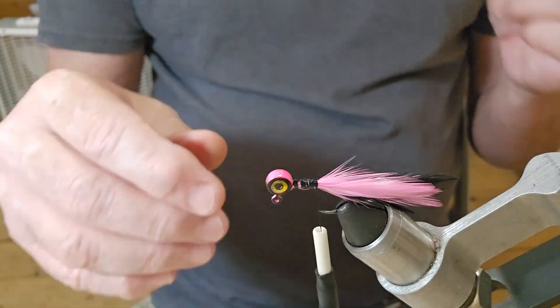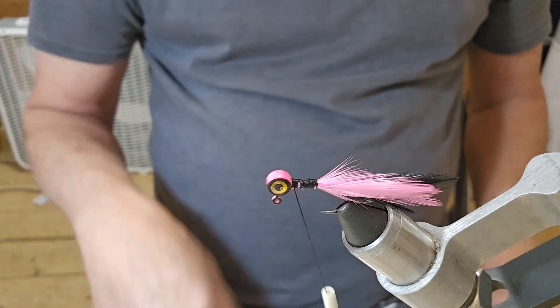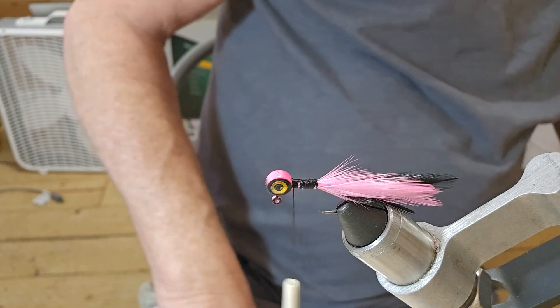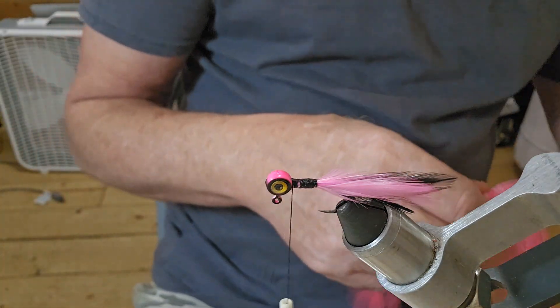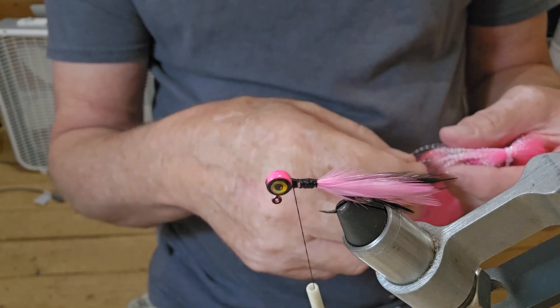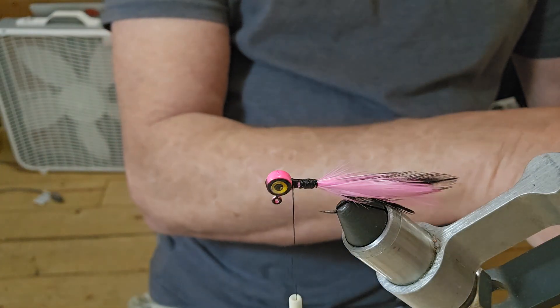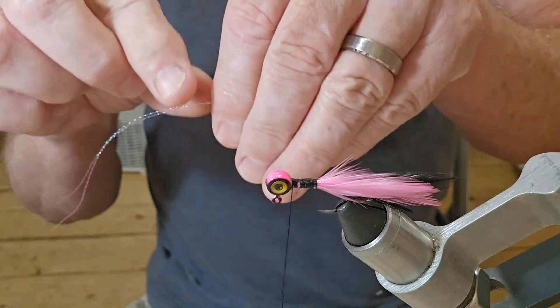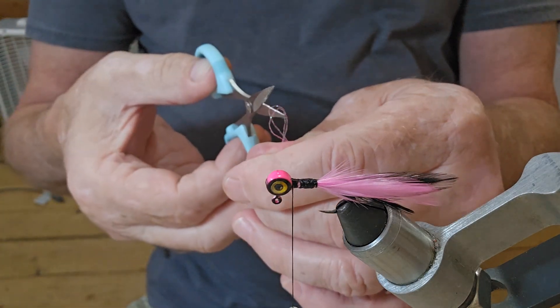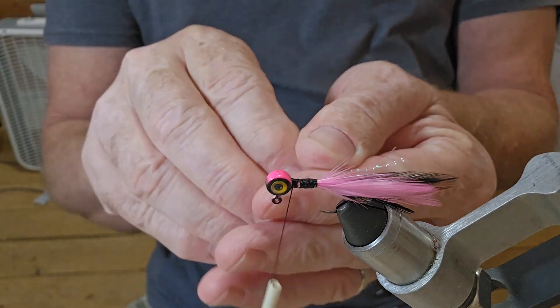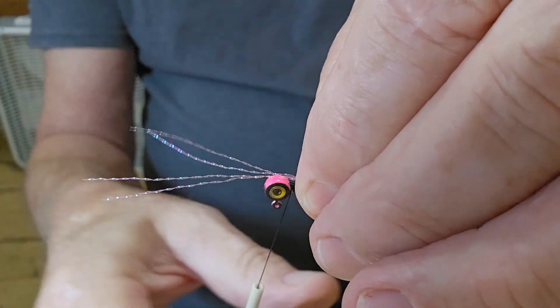Okay, that's what we've got so far. I believe we do want to tie a little crystal flash in this. I have got some pink crystal flash we're going to use on this. I'm just going to cut me off a couple of pieces of it, and we will fold it and give it another cut, and just lay that right back on top of our hook.